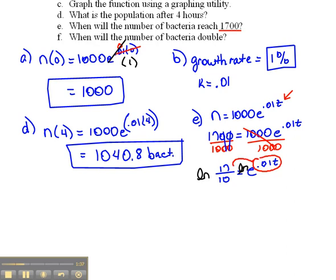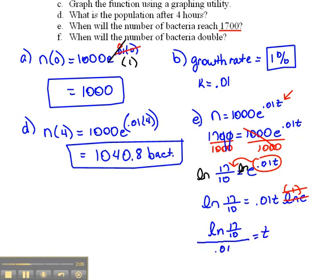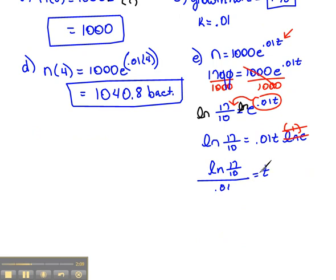And by doing that, that allows us to bring this exponent down in front of the natural log. So we have the natural log of 17 tenths equals 0.01 T natural log E. The natural log of E is really 1, and 1 times anything is itself. So now if we divide both sides by 0.01, we have the natural log of 17 over 10 divided by 0.01 is our time. Now that can be plugged into our calculator very easily, and we should get that time is 53.1 hours. So after 53.1 hours, we'll have 1,700 bacteria at that growth rate.